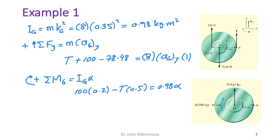We have three unknowns — tension, a_G, and α — but only two equations, so we assume rolling without slipping. As the spool rolls clockwise, a_G translates as α·r.